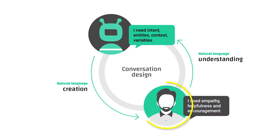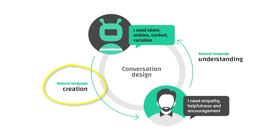That triggers something in the robot and then it can respond. But humans have a different brain and they need something else to function. They need empathy, helpfulness, persuasiveness, sometimes a pat on the back. So when we design conversations and write the dialogue, we want to make sure that the text we write adheres to that functioning of the human brain.